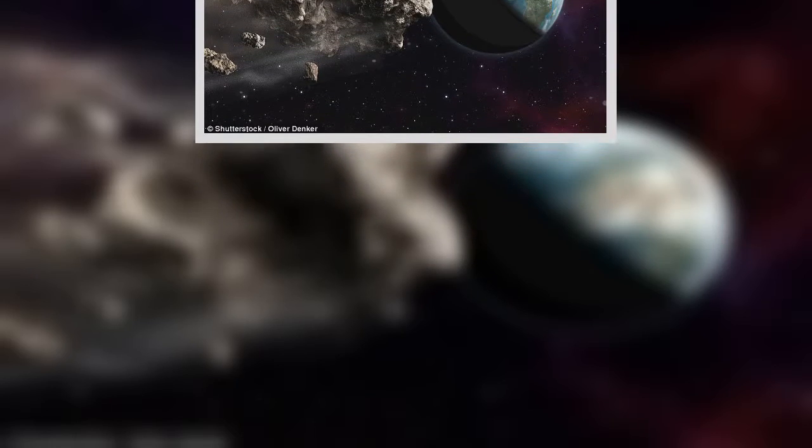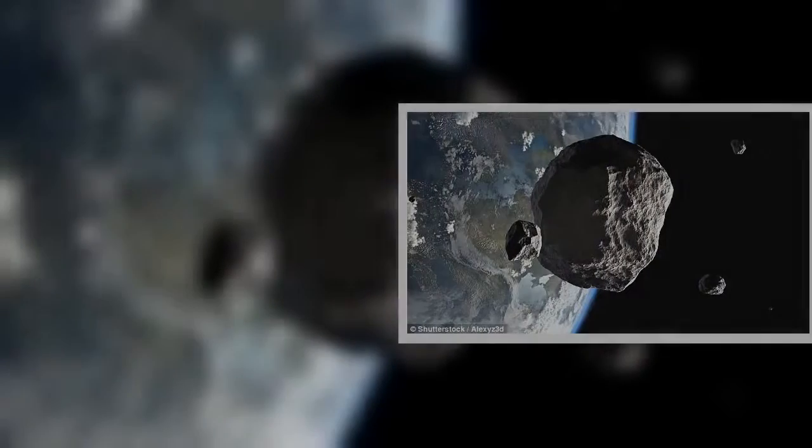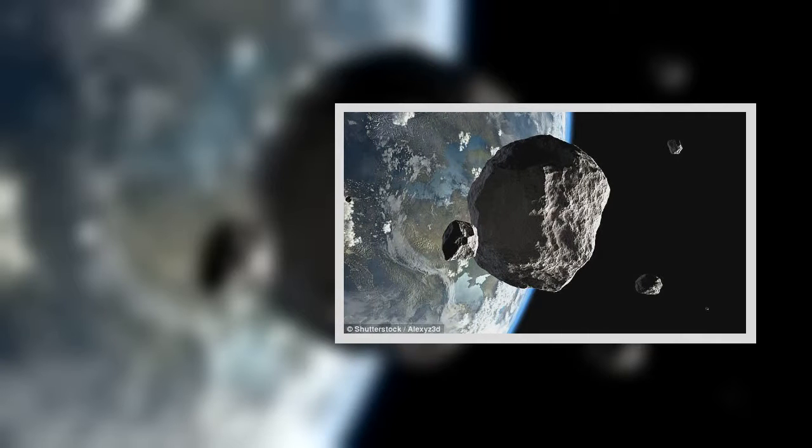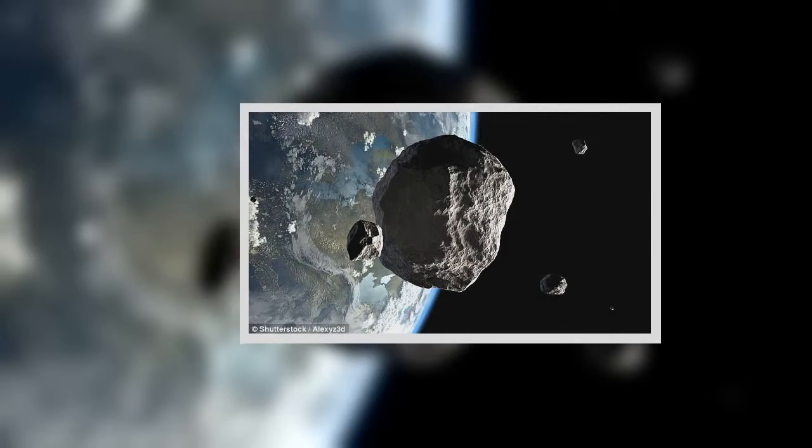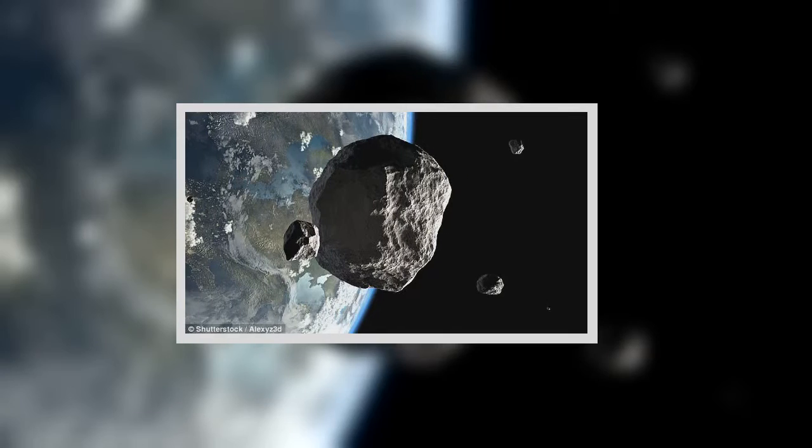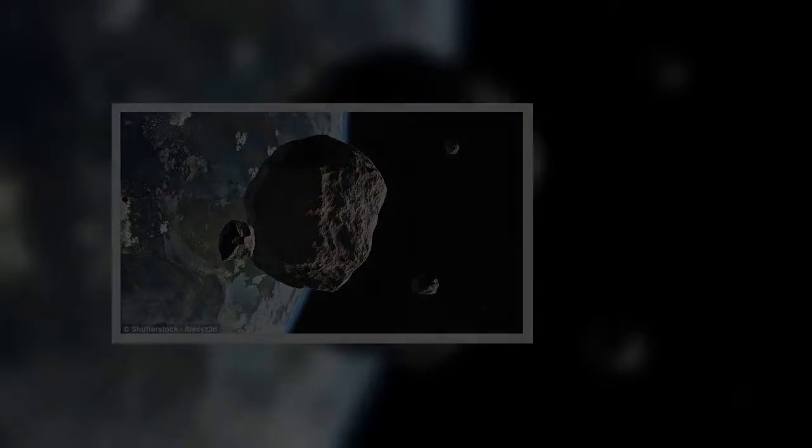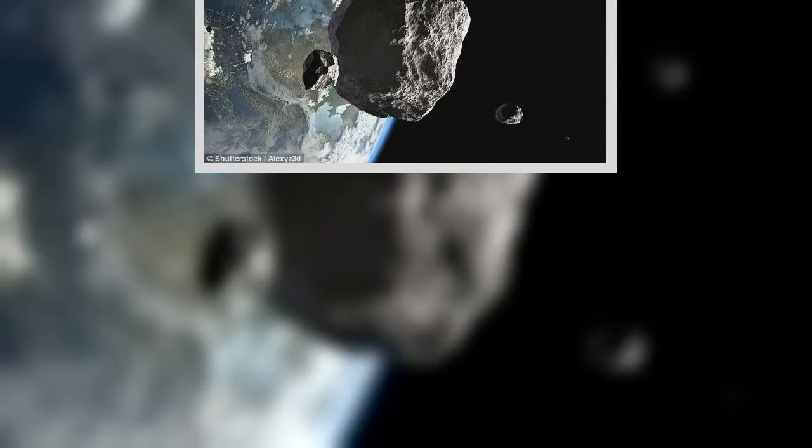Most of these space rocks reside in the asteroid belt, which is located between Jupiter and Mars. But some asteroids skim by Earth, and they are called near-Earth objects.